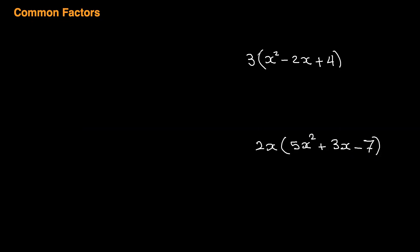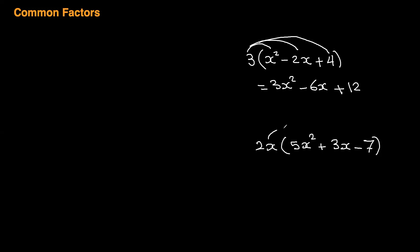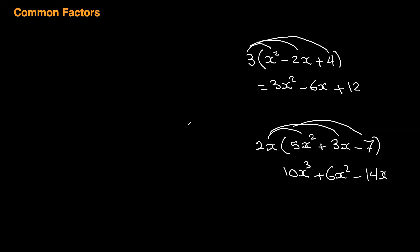Distribution is something we did in the last lesson. If I have 3 and brackets like this, you distribute the 3 into each term: this gives you 3x squared, 3 times negative 2 is negative 6x, and 3 times positive 4 is positive 12. Similarly, if I distribute 2x into a trinomial, 2x times 5x squared is 10x cubed, plus 2 times 3 is 6 and x times x is x squared, and 2x times negative 7 is negative 14x.